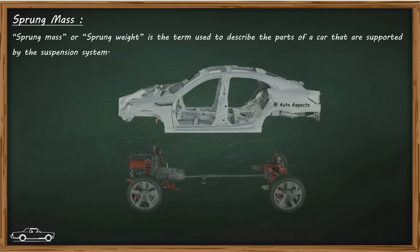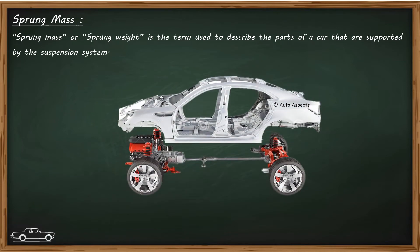What is sprung mass? It is the term used to describe the parts of a vehicle that are supported by the suspension. They generally include the vehicle's frame, body, engine, powertrain, and fuel tank.